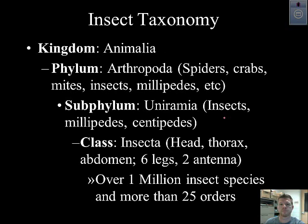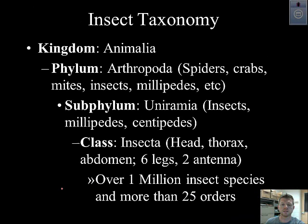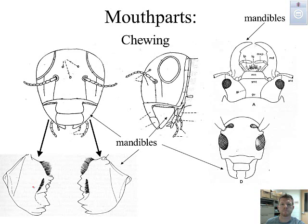Here's the basic insect taxonomy. Insects belong to the kingdom Animalia, the phylum Arthropoda, subphylum Uniramia, class Insecta. There are over 1 million insect species and more than 25 orders. We're going to focus on just a few of those orders that are very common and easy to find right around our neighborhoods.